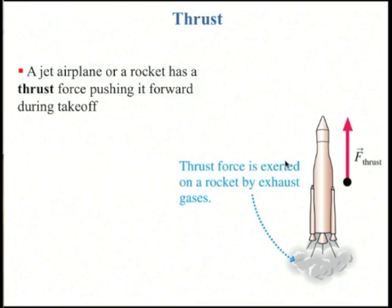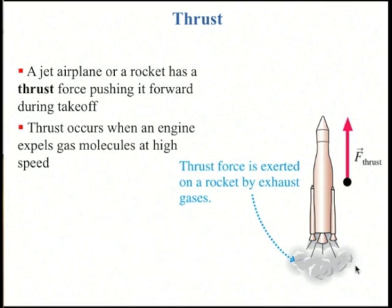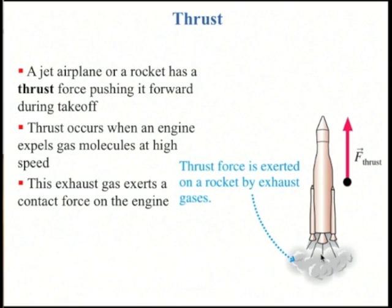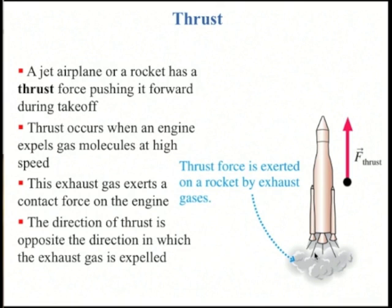Thrust: a jet airplane or a rocket has a thrust force pushing it forward. Thrust occurs when an engine expels gases at high speed. The exhaust exerts a contact force on the engine opposite to the direction the exhaust is expelled. Here the rocket is pushing gases downwards, so the gases push the rocket upwards.